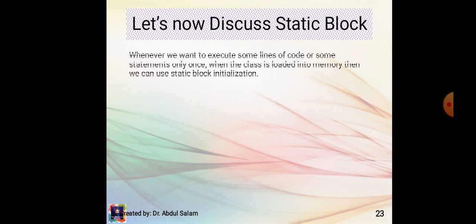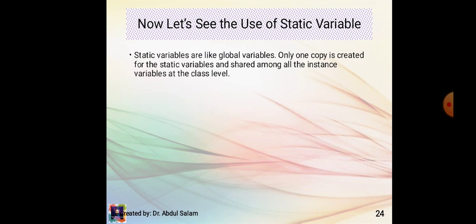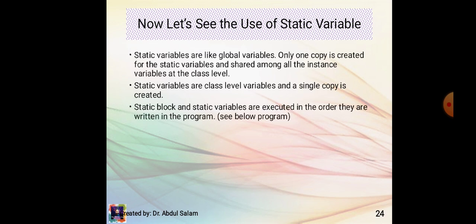Static block: whenever we want to execute some lines of code only once when the class is loaded into memory, we can use static block initialization. Static variables are like global variables — only one copy is created and shared among all instances at the class level. Static block and static variables are executed in the order they are written in the program.